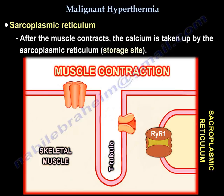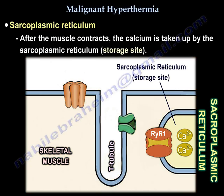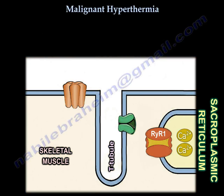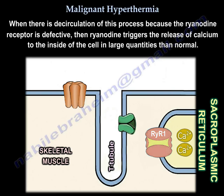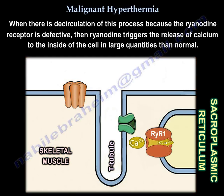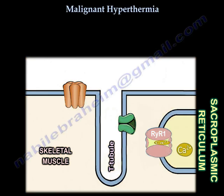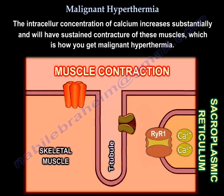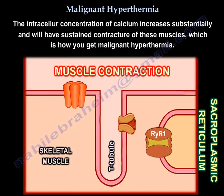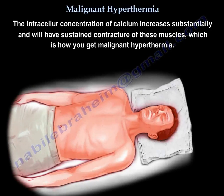After the muscle contracts, calcium is taken up by the sarcoplasmic reticulum — the storage site — and the muscle relaxes. When there is dysregulation of this process because the ryanodine receptor is defective, it triggers the release of calcium in larger quantities than normal into the inside of the cell. The intracellular concentration of calcium increases substantially, causing sustained contracture of the muscles — and that is how malignant hyperthermia occurs.